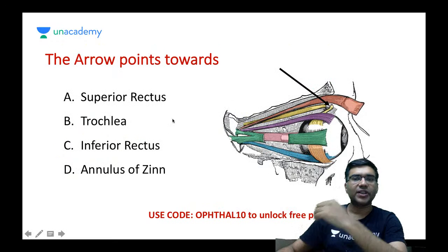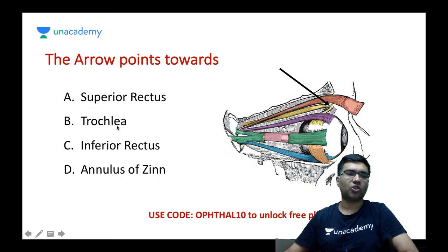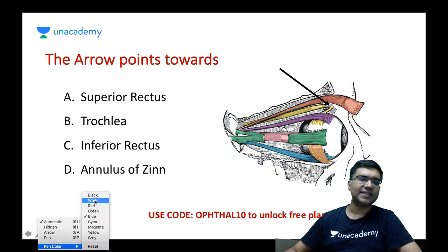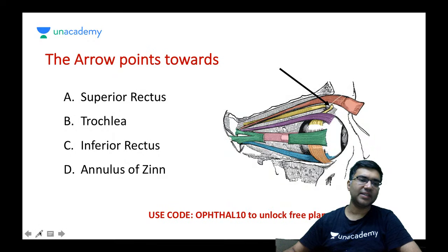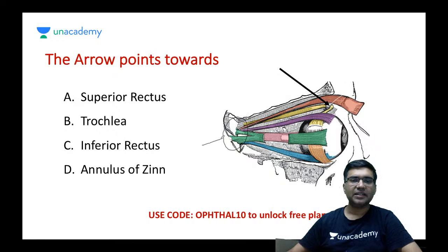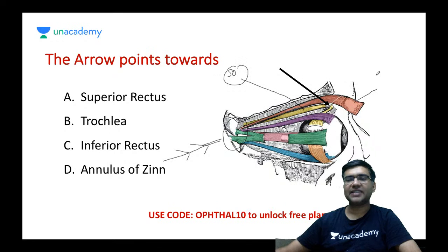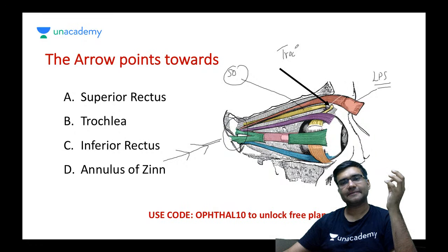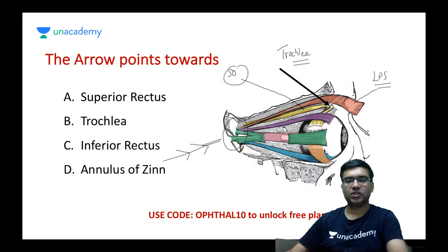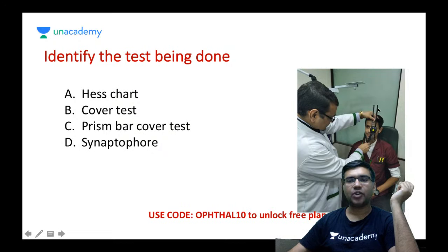This arrow points to a bony prominence from which a muscle takes a turn and attaches posterior to the equator. All the extraocular muscles originate from the annulus of Zinn. This muscle taking a turn is the superior oblique. The brown muscle attaching to the eyelid is the levator palpebrae superioris. The bony prominence from which the superior oblique takes its turn is called the trochlea.